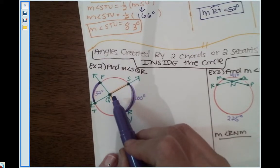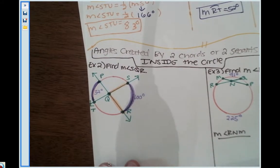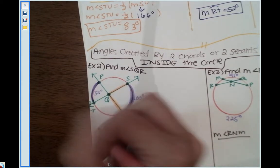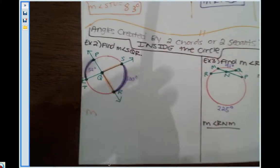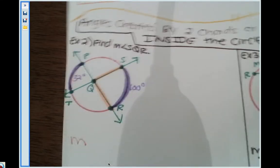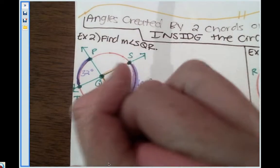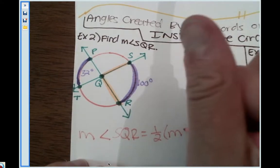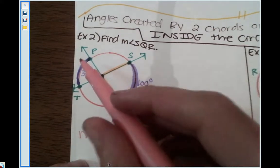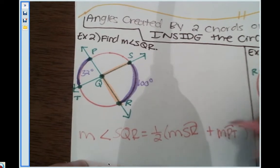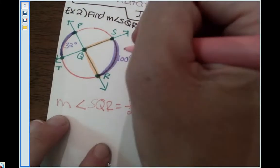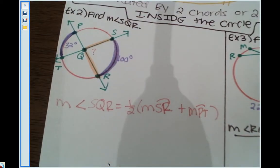This angle equals the sum of the two intercepted arcs added together, then divided by two. So the measure of angle SQR equals one half times the sum of arc SR plus arc PT. The angle measure is what we're solving for.